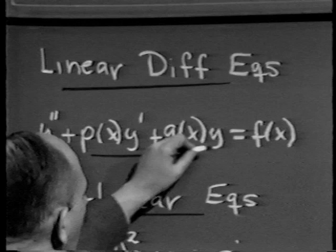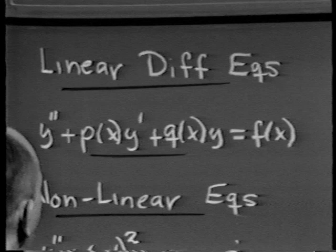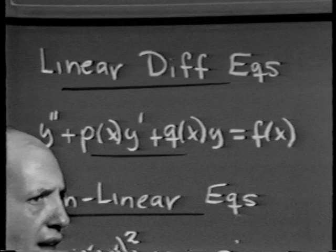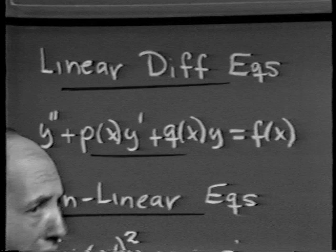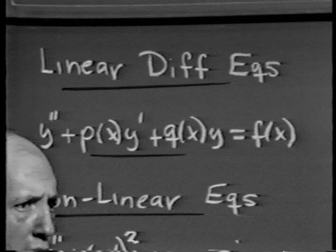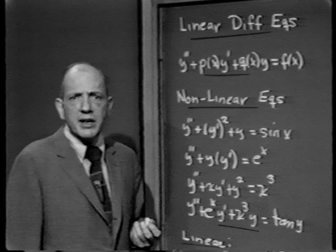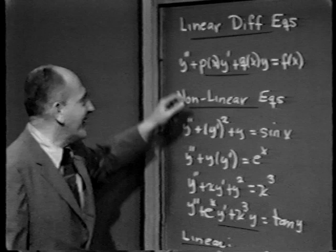Notice that I assume the leading coefficient here is 1. Somebody might ask, couldn't you have had some function of x times y double prime? The answer is yes, but I'm assuming that if I had a function r of x multiplying y double prime, I could divide both sides through by that coefficient and wind up with an equation of this particular type — without loss of generality. Many of my theorems will be affected if the coefficient of y double prime isn't 1.